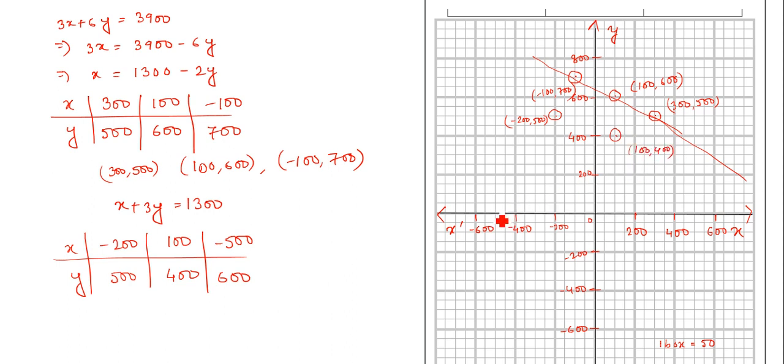And next minus 500 and upwards it will go 600. That is this point. So minus 500 and 600.